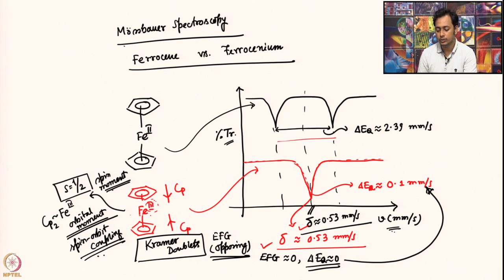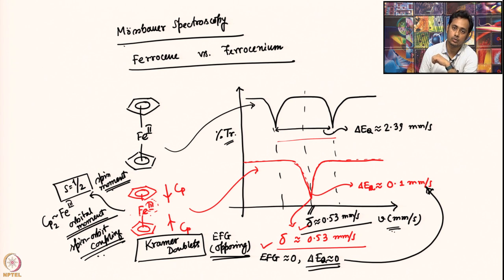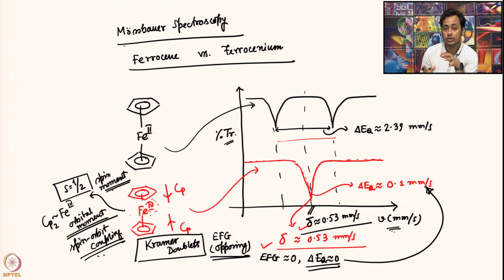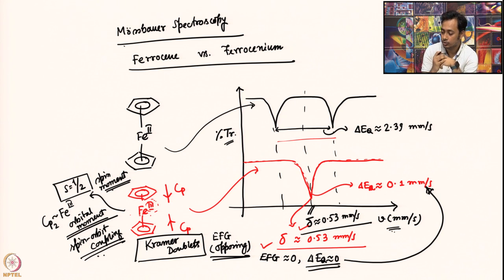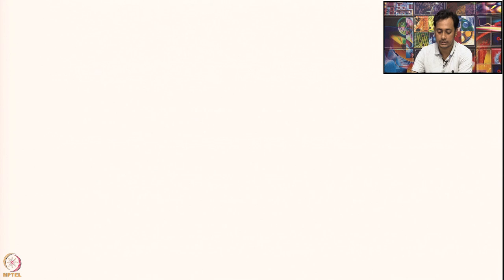Our next goal is to use this information to understand the electronic distribution in different ferrocene derivatives. Let us take one example of such a system.